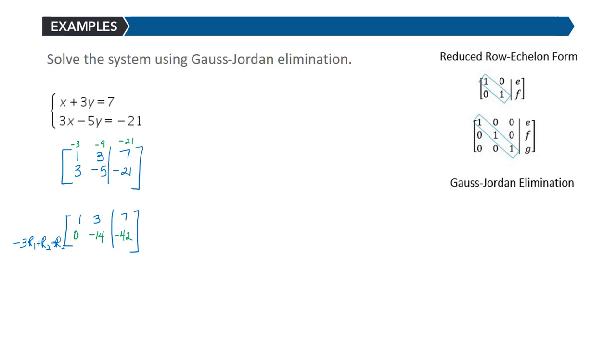So now I have a 1 leading, a 0 below it, and I need to get a 1 in the second row, second column. So here I can multiply or divide each entry by negative 14, or multiply by negative 1 over 14.